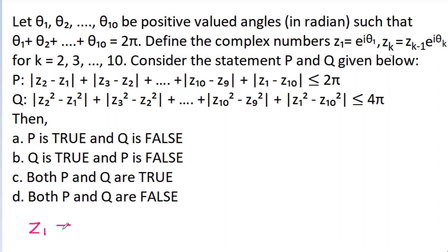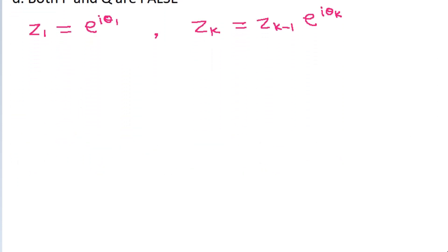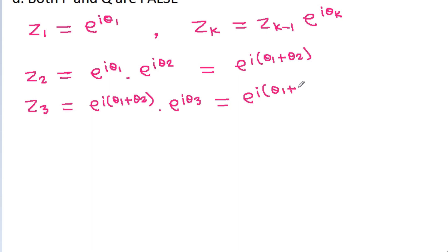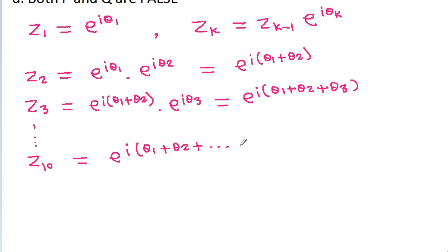We have g1 equal to e^(iθ1) and gk equal to gk-1 times e^(iθk). So g2 will be equal to g1 times e^(iθ2), that is e^(i(θ1+θ2)). Similarly, g3 equals e^(i(θ1+θ2+θ3)), and in the same way g10 will be equal to e^(i(θ1+θ2+...+θ10)).